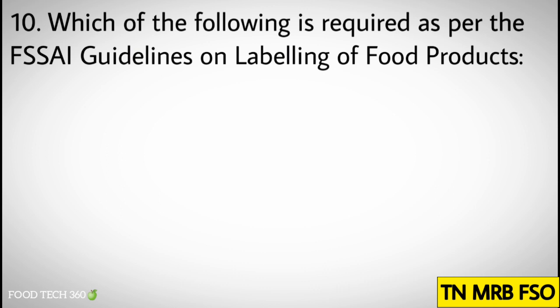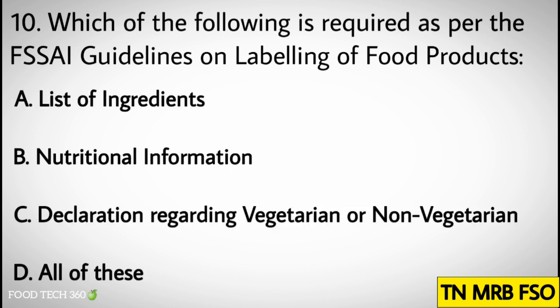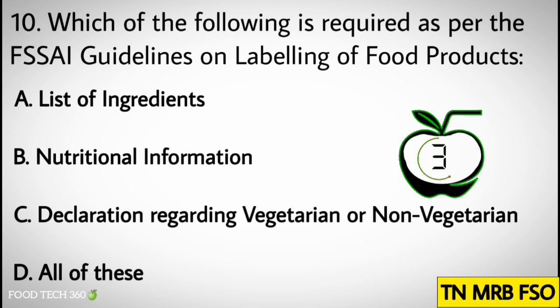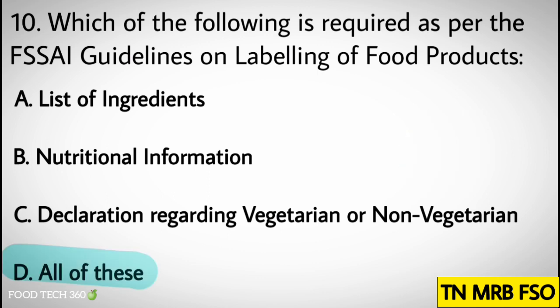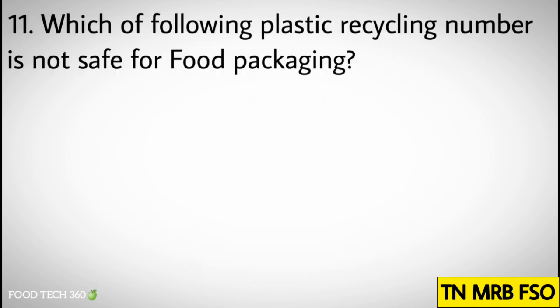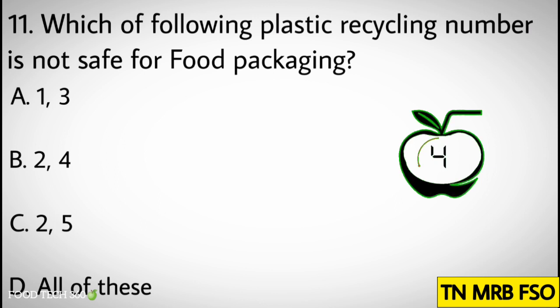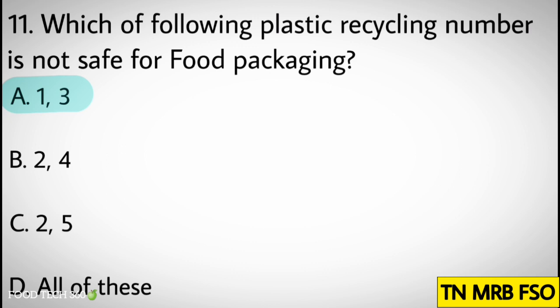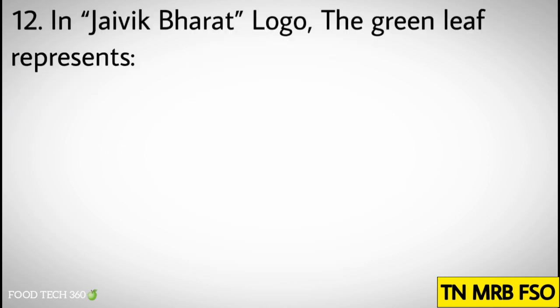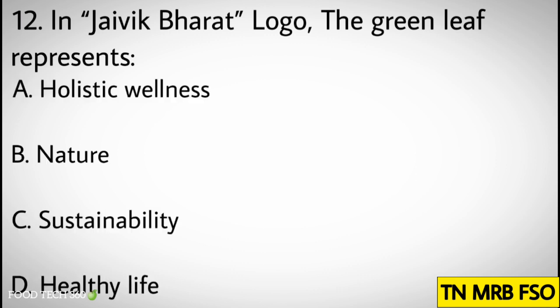Question number ten: Which of the following is required as per FSSAI guidelines on labeling of food products? Options: A) List of ingredients, B) Nutritional information, C) Declaration regarding vegetarian or non-vegetarian, D) All of these. Correct answer: D) All of these. Question number eleven: Which of the following plastic recycling numbers is not safe for food packaging? Options: A) One and three, B) Two and four, C) Two and five, D) All of these. Correct answer: A) One and three.